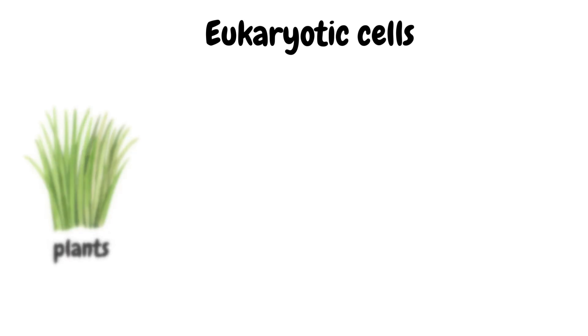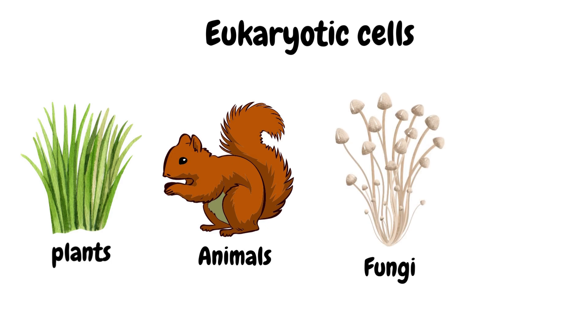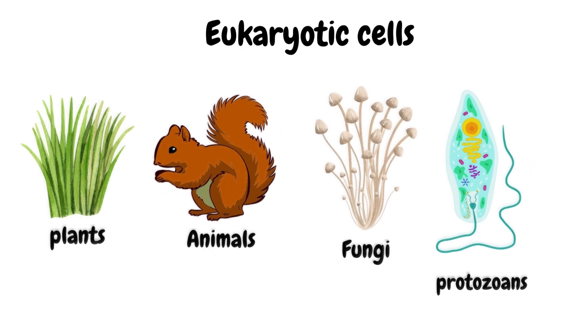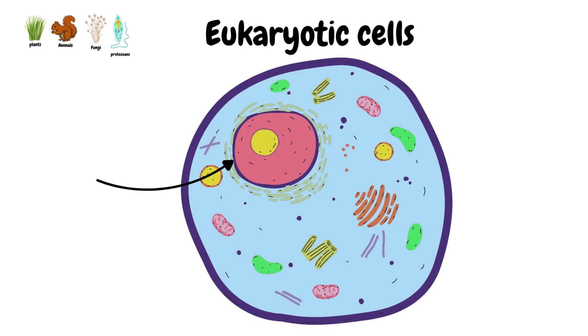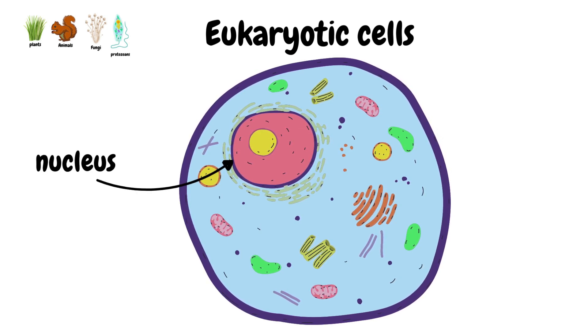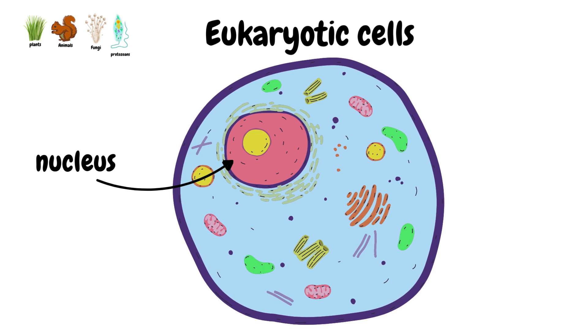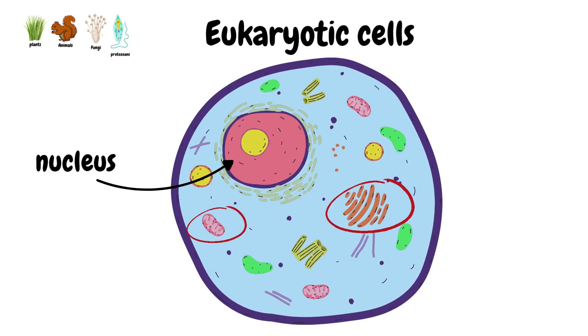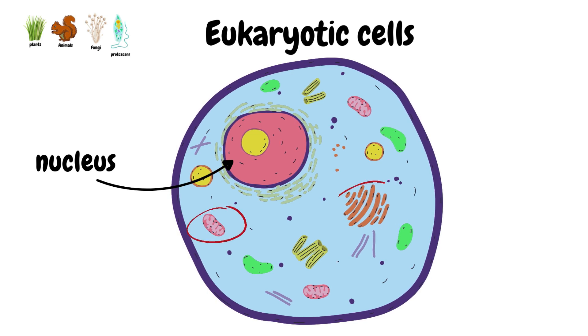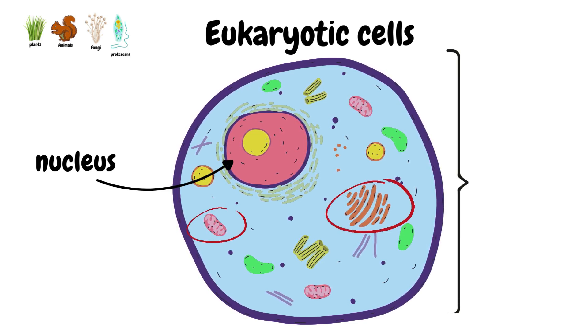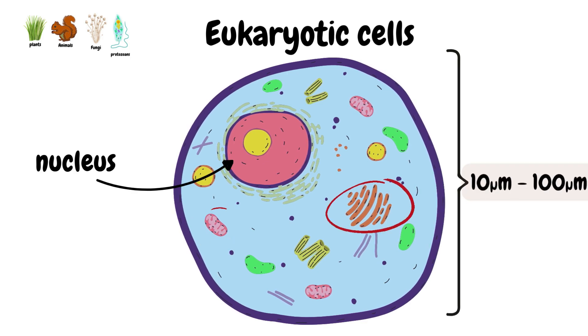Prokaryotes also lack other membrane-bound organelles and are typically very small, ranging from 0.1 to 0.5 micrometers in diameter. Eukaryotic cells, on the other hand, are the structural units of more complex organisms such as plants, animals, fungi, and protozoa. Unlike prokaryotic cells, eukaryotic cells have a true nucleus which encloses their DNA. These cells are highly organized and have numerous membrane-bound compartments called organelles, and their size ranges from 10 to 100 micrometers in diameter.